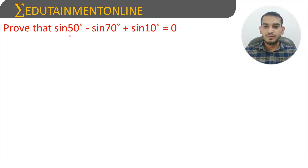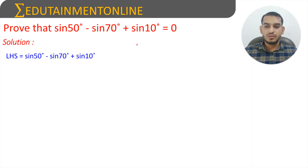Prove that sin 50 degrees minus sin 70 degrees plus sin 10 degrees is equal to 0. We will take the LHS, which is sin 50 degrees minus sin 70 degrees plus sin 10 degrees.